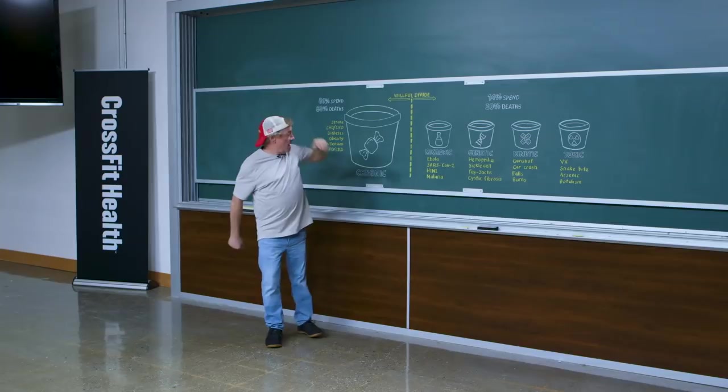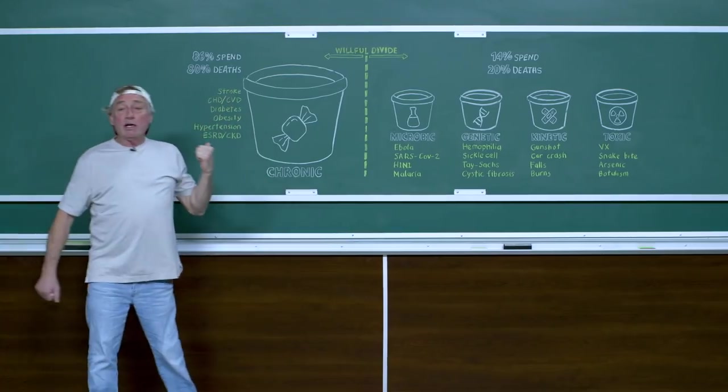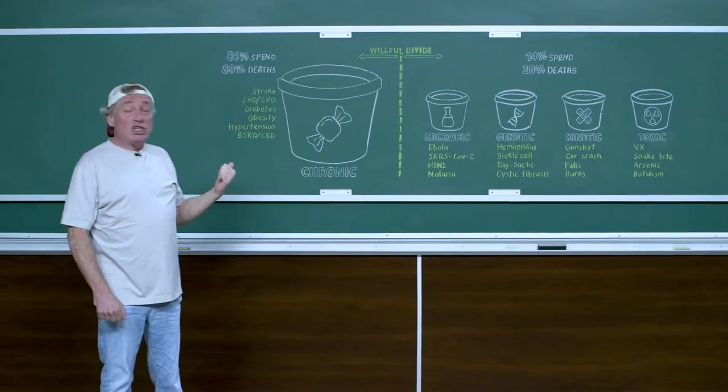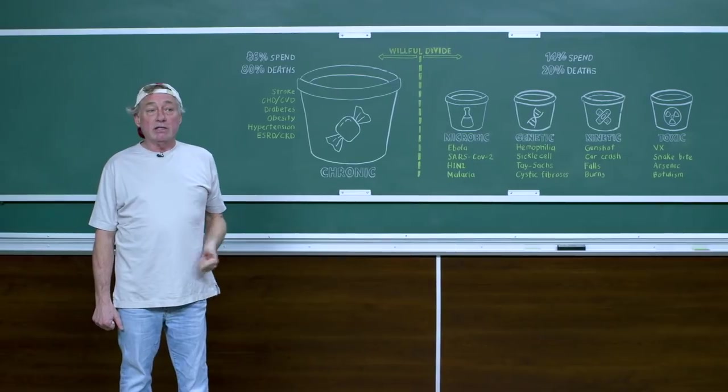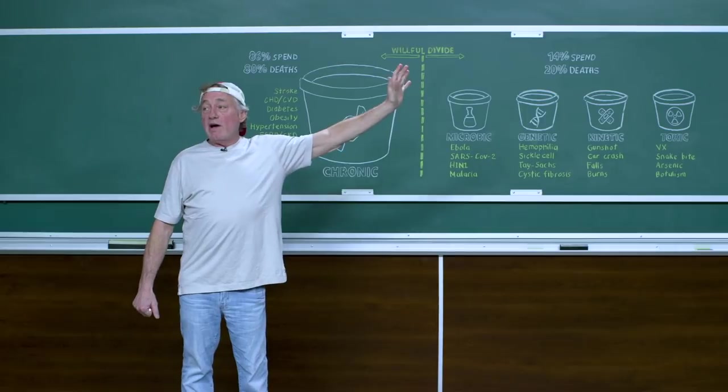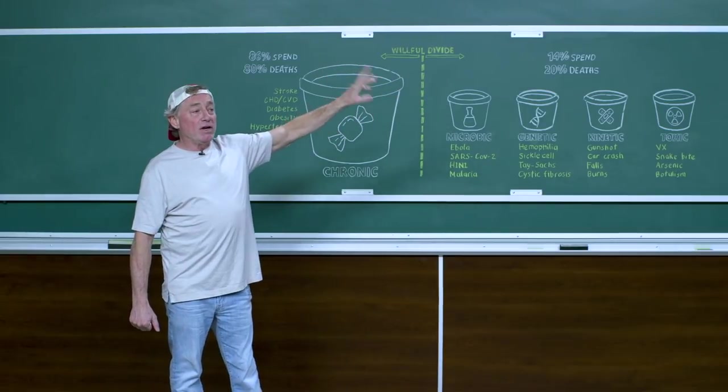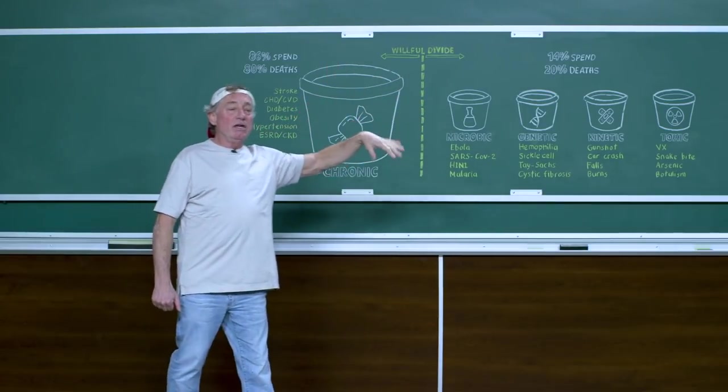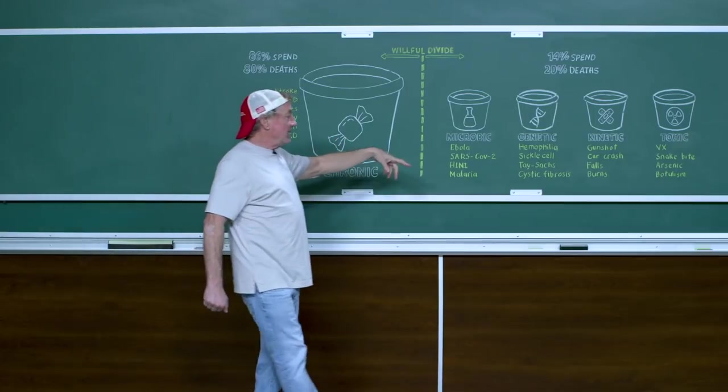And I label these things and they are chronic, microbic, genetic, kinetic and toxic. So we've got chronic disease, microbic, it's the bugs, the viruses, the bacteria, the fungi, the prions, those nasty things.